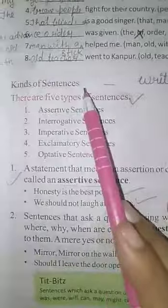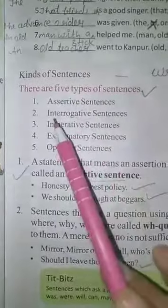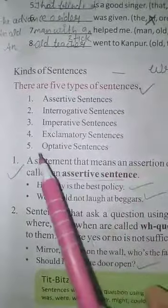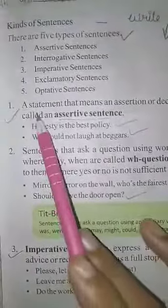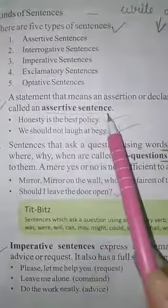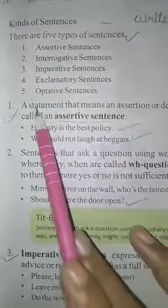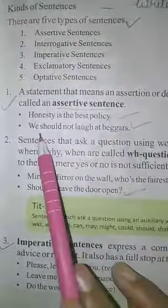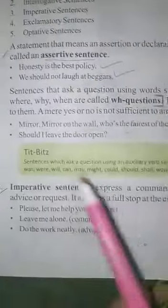Read these sentences very carefully, you will easily understand. Next topic is kinds of sentences. There are five kinds of sentences: first, assertive sentence; second, interrogative sentences; third, imperative sentences; fourth, exclamatory sentences; and fifth, optative sentences. Here are the definitions and examples of each kind of sentence. An assertive sentence is a sentence that makes an assertion or declaration about something or somebody. See the example.